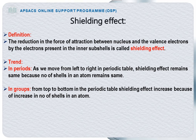Trends. In periods, as we move from left to right in the periodic table, shielding effect remains the same, because the number of shells in an atom remains the same. In groups, from top to bottom in the periodic table, shielding effect increases, because of an increase in the number of shells in an atom. When the number of shells increases, the number of inner electrons in the shells increases, and as a result, the shielding effect increases.